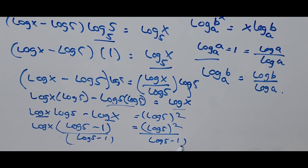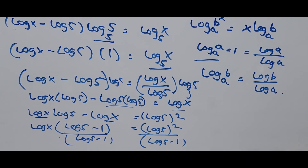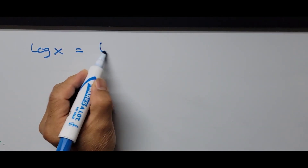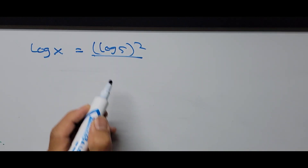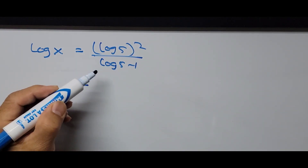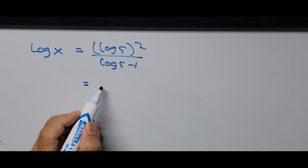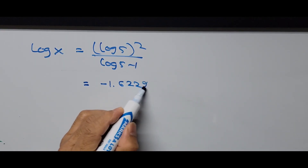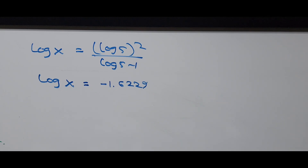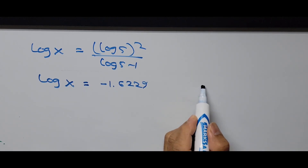Simplifying further, we divide both sides by (log of 5 minus 1). The left side cancels, leaving log of X, and the right side is log of 5 squared divided by (log of 5 minus 1). Using a calculator, the value of log of 5 squared divided by (log of 5 minus 1) equals negative 1.6229. That is the value of log of X.